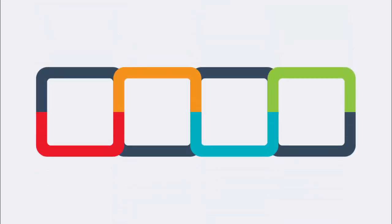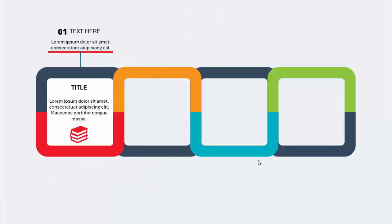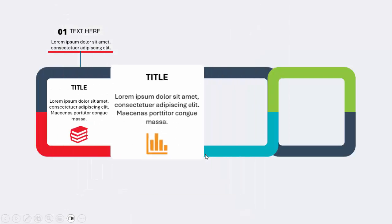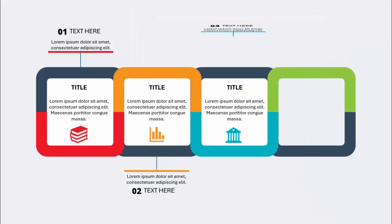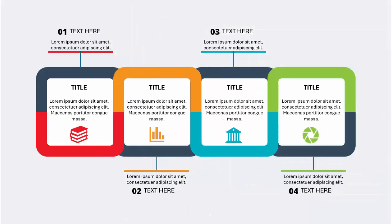In today's tutorial I'm going to show you how to create a four-options infographic slide in PowerPoint. This is how the slide works: when I click it will show me four squares, and when I click it will show me the details of each one — the title, the detailed text, along with the icon. At the top you can also add the option number and some more details. Each click reveals the second option, the third one, and the fourth one.